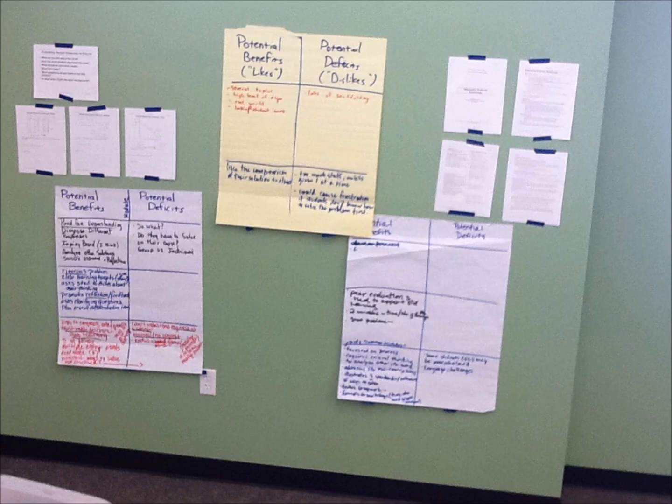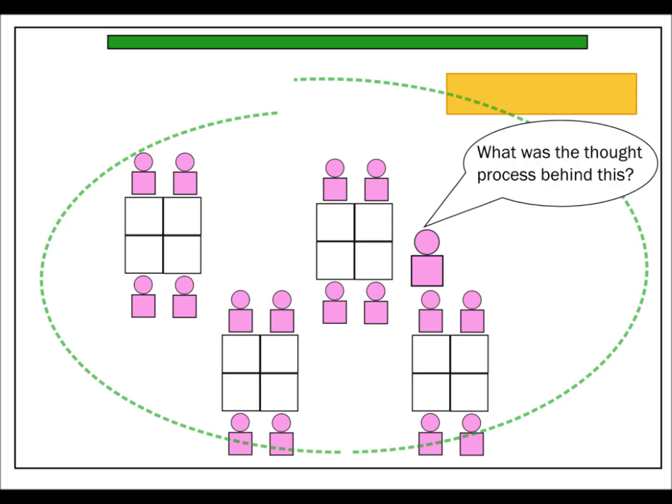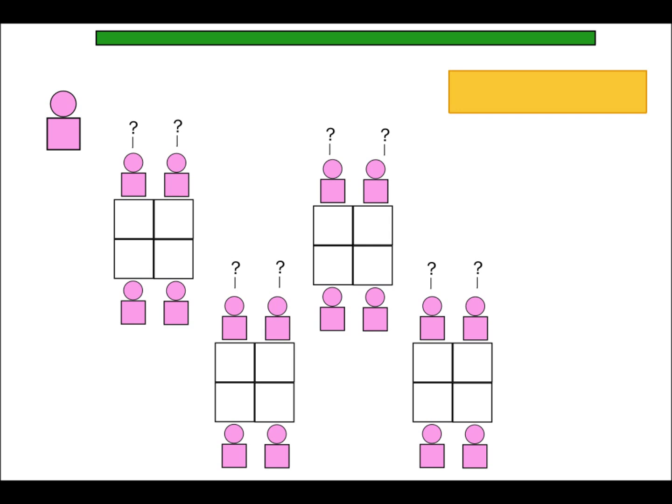You might want to have some of those big poster post-it thingies on hand. Students tend to write larger when they have more room to write. Then it will allow you to immediately see and assess their work and probe for understanding, being sure to ask everyone in each group. What was the thought process behind this? How can we be sure that this is the correct way to solve the problem?